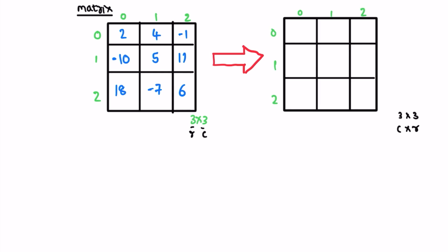We iterate from left to right inside the input matrix. Starting at index (0,0): i is the row and j is the column, and the transpose matrix element at (j,i) equals matrix at (i,j). So starting at (0,0) we add 2. The next element is 4 at (0,1), which goes to (1,0). Next is -1 at (0,2), placed at (2,0). Moving to the second row, -10 is at (1,0) and gets added at (0,1) in the output.